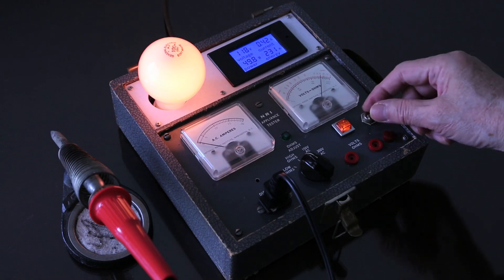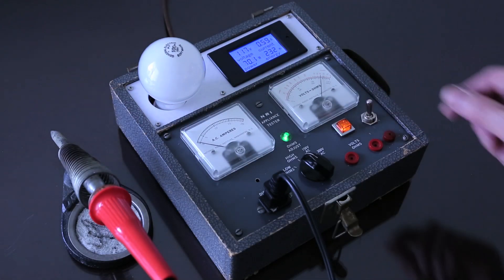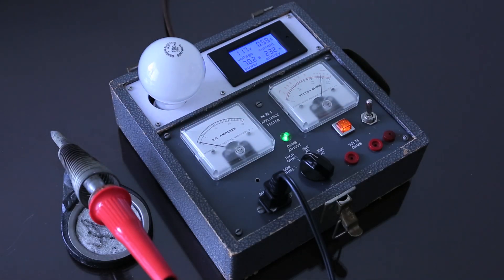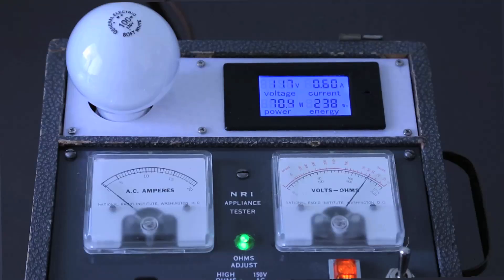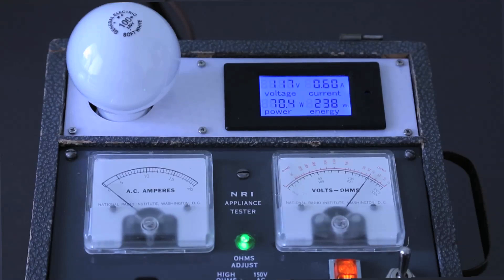When I am ready to use this iron, throw the switch to the full position. See the meter, it indicates 600 milliamps and 70.4 watts.